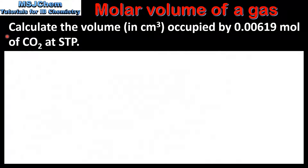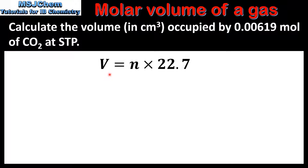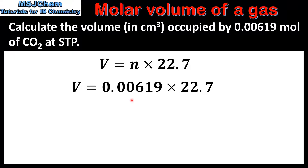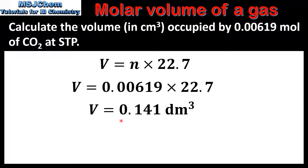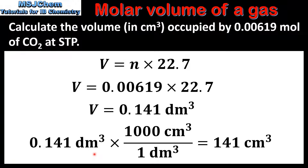The next example is to calculate the volume in centimetres cubed occupied by 0.00619 moles of carbon dioxide at STP. First we'll calculate the volume in decimetres cubed and then convert to centimetres cubed. We multiply the amount in moles by the molar volume, which gives us 0.141 decimetres cubed. Since the question asks for centimetres cubed, we convert: one decimetre cubed equals 1000 centimetres cubed, so we multiply by 1000, giving a volume of 141 centimetres cubed of carbon dioxide.